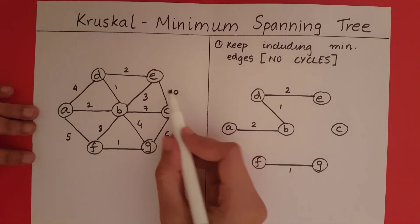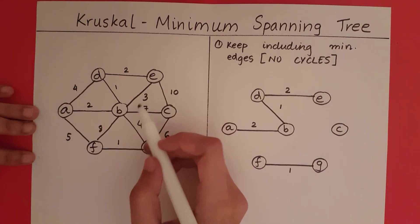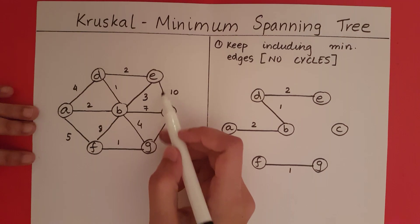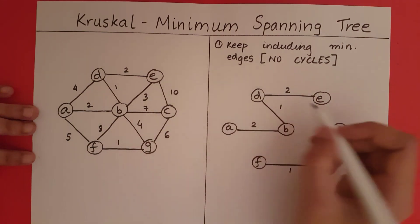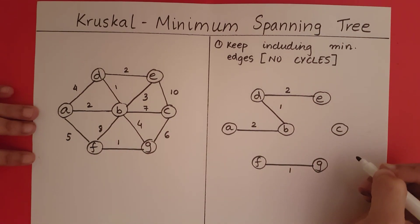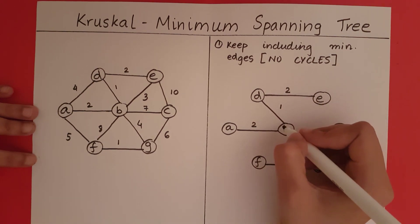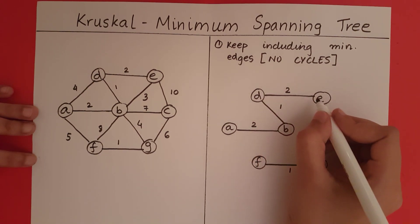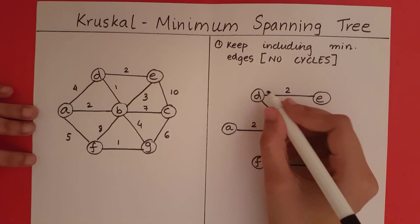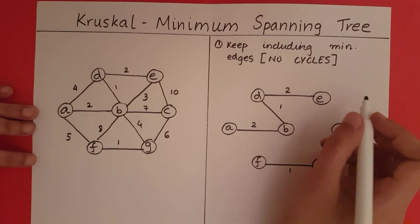Then I have an edge of 3, which is the next minimum edge. Now can I include this edge 3? No, I cannot include 3. Why can I not include 3? Because when I include 3, I will be forming a cycle between B, D, and E. So since it forms a cycle, I cannot include 3.